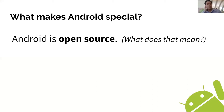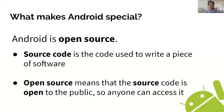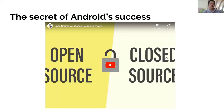One thing is that Android is open source. Source code is basically the code you write to create an app or piece of software, and Android the platform has its own source code. Open source means you take that source and make it open to the public — you share it with everyone. That's very different from closed source products, which keep the code private and only show you the finished app. In Android, they actually show you exactly how everything is made. Here's a short video about the advantages of open source versus closed source.